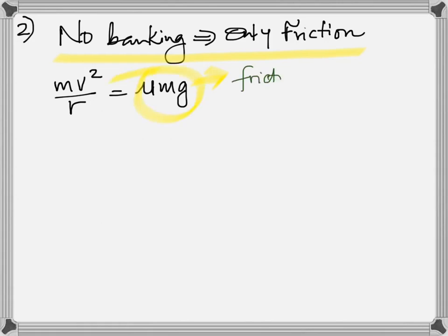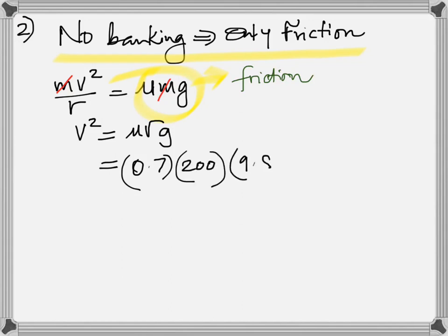How do you get this mu Mg? The formula for friction is mu times Fn. On a level surface, Fn is equal to Mg, so that's why you get mu Mg. Rearrange, cancel the masses. Coefficient of friction is 0.7 times radius 200 times 9.8. Remember to take the square root at the end. Your answer is 37 meter per second.